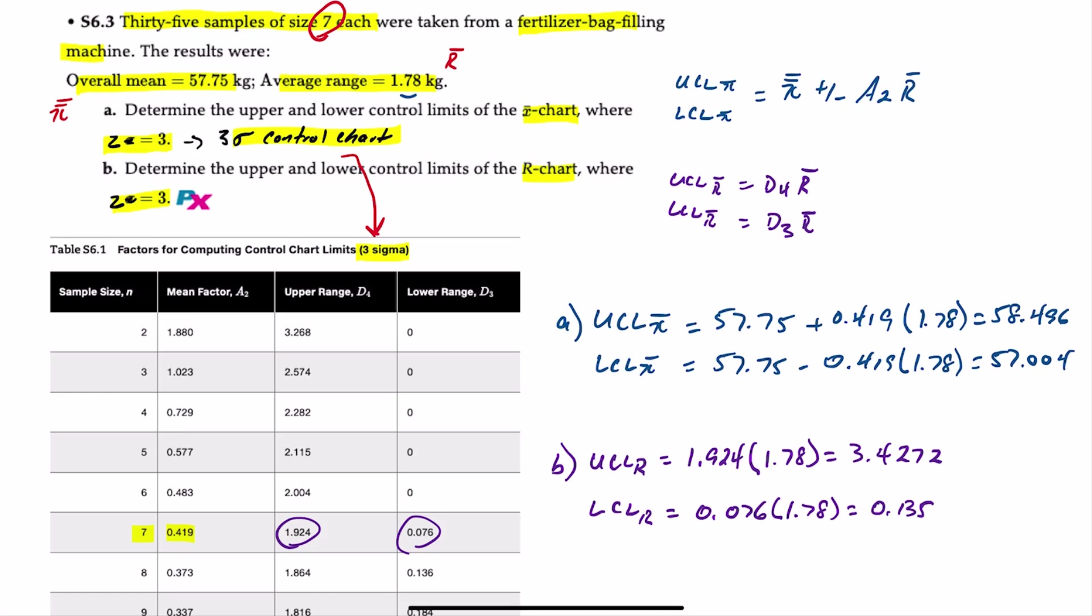And that's it. That's how we determine the upper and lower control limits when we're not given a standard deviation but are given the overall mean and range so that we can use the three-sigma control chart limit factor table.